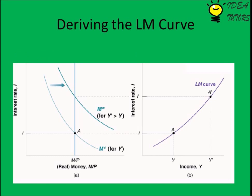The figure shows that the LM curve is derived by joining equilibrium points of the money market. Thus, we can say that the LM curve is the locus of points where the money market is in equilibrium.